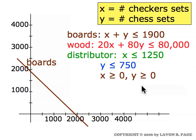When we start graphing the constraints we find that the board constraint gives us the brown line shown here and the solution region for the inequality is the points on or to the left of that brown line. The wood constraint when you graph the line 20X plus 80Y equals 80,000 you get the red line shown here and again the solution region for that second inequality is the half plane that contains the origin.